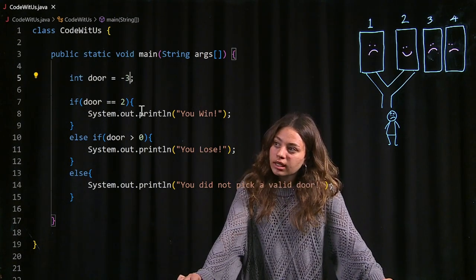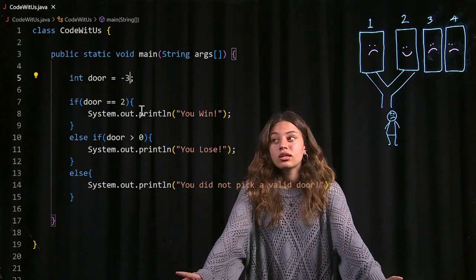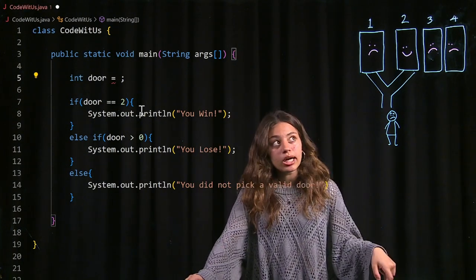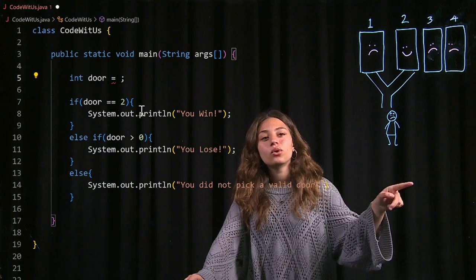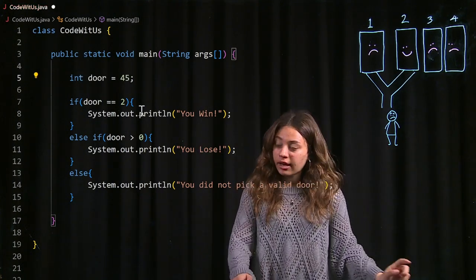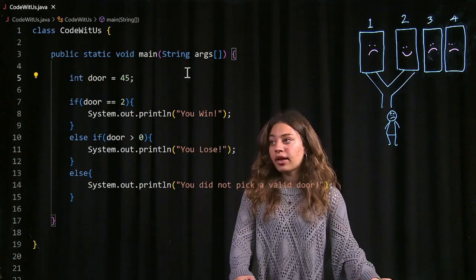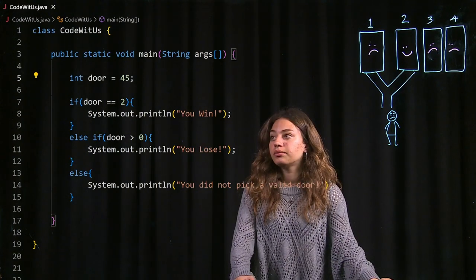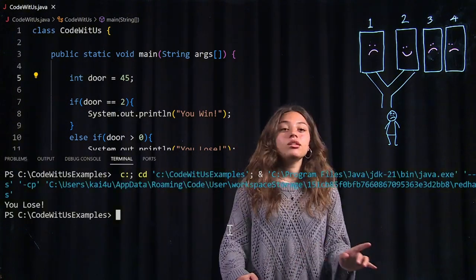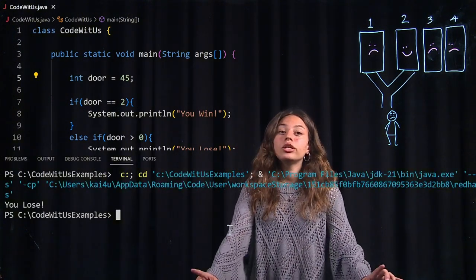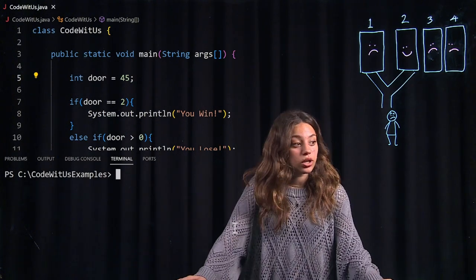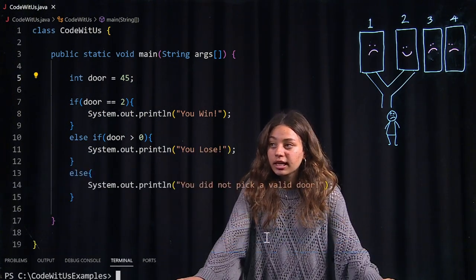there's one scenario which can kind of slip through the cracks of my code and that's if I pick a positive door but it's not a positive door in the range of valid doors. So if I pick door 45 and I run that, it tells me I lose even though what should be printed is you did not pick a valid door. So I need to fix that and it's very simple to fix.